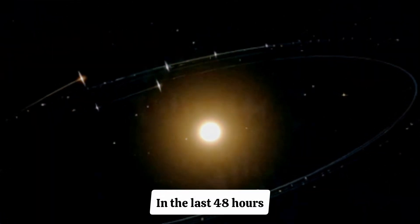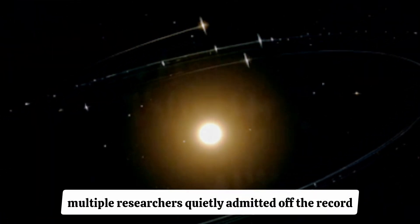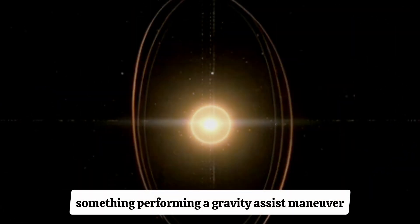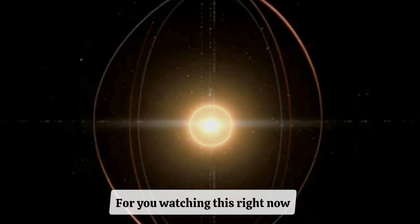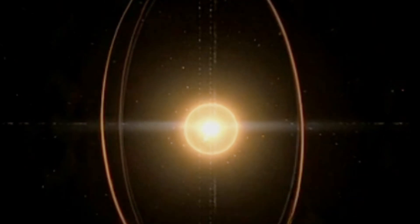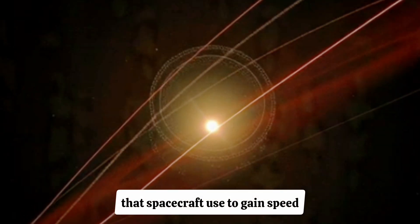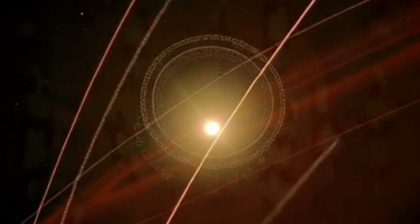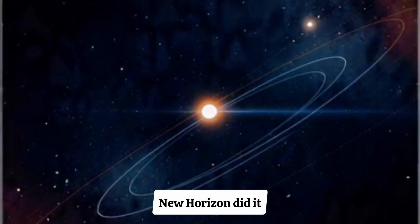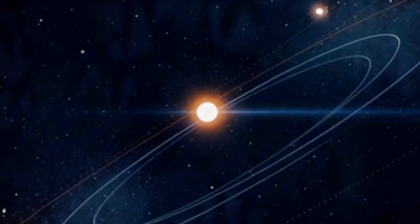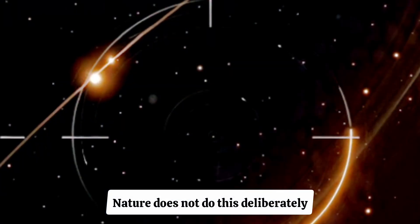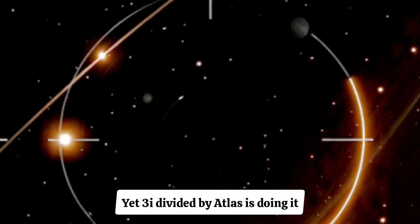And this is where the debate turns intense. In the last 48 hours, multiple researchers quietly admitted off the record that the object is behaving exactly like something performing a gravity assist maneuver. For you watching this right now, that means it's doing the same kind of trajectory trick that spacecraft use to gain speed or change direction using a planet's gravity. Voyager 1 did it. Voyager 2 did it. New Horizon did it. Cassini did it. Human space agencies do this deliberately. Nature does not do this deliberately. Yet 3i divided by Atlas is doing it.